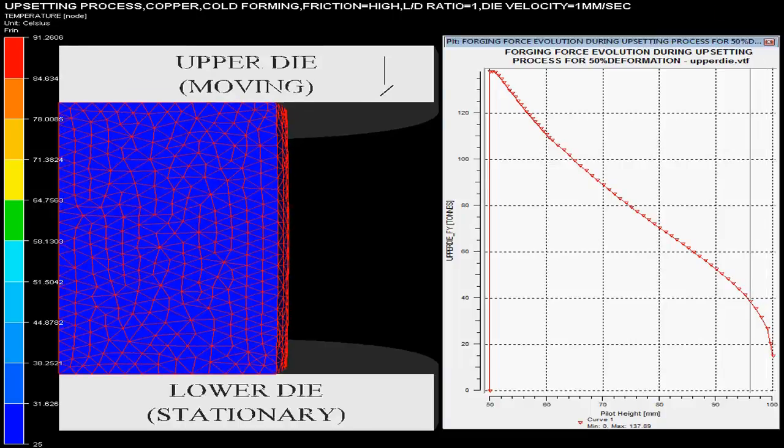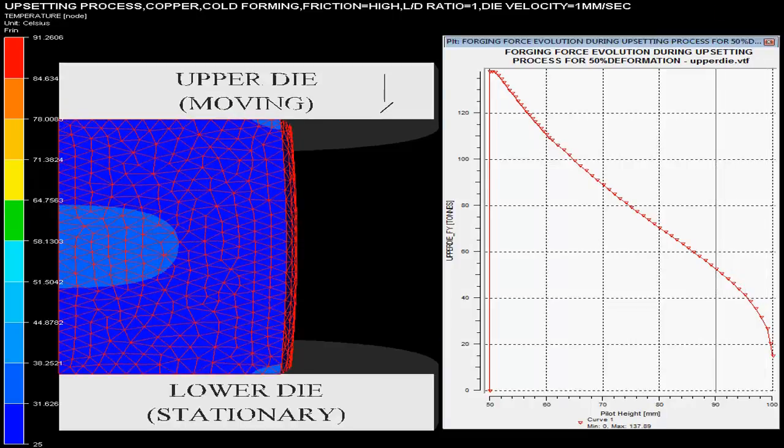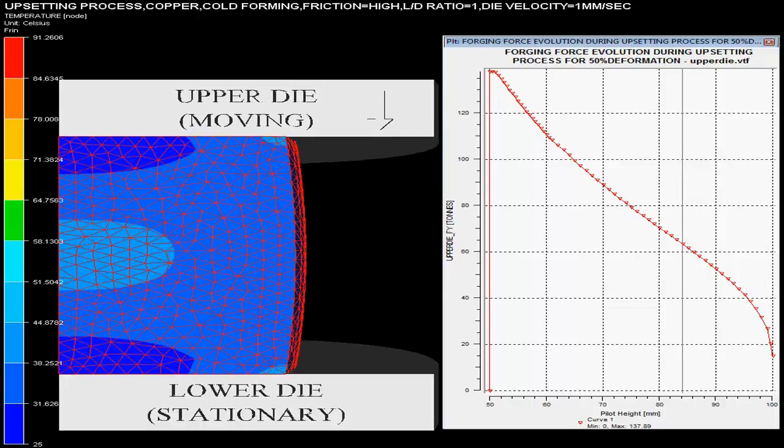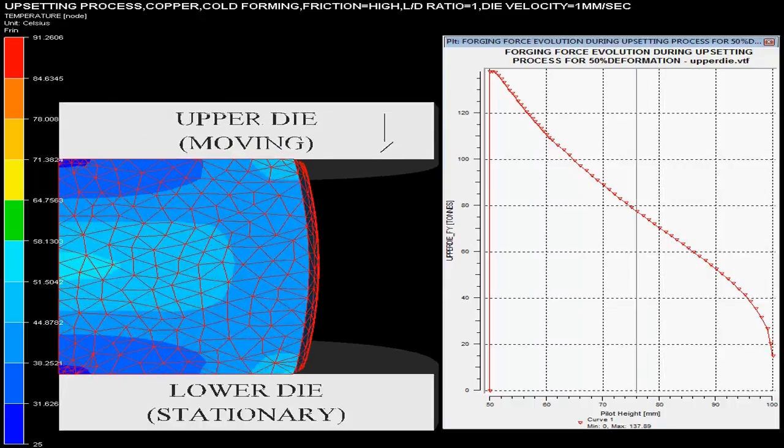The video shows the upsetting operation taking place using a mechanical press. The initial billet of copper having L by D ratio equal to 1 is taken cold.